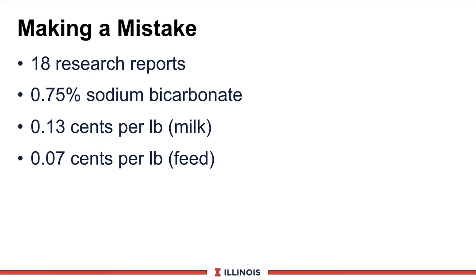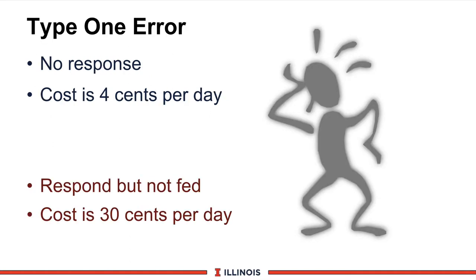What if you make a mistake and do or do not feed a buffer? This is called a type 1, type 2 error, based on 18 Journal of Dairy Science or Animal Science research reports. The level of bicarb was 0.75% of total ration dry matter. The assumed cost of milk was 13 cents a pound or $13 per hundredweight, and the cost for feed was 7 cents per pound of dry matter. A type 1 error is there is no response, but you went ahead and fed a buffer product — that would cost you about 4 cents a day. The other error is you decide not to feed it, but the response was there — that would cost you 30 cents in lost milk production and profitability. We'll give you guidelines to try to minimize making either of these two errors.